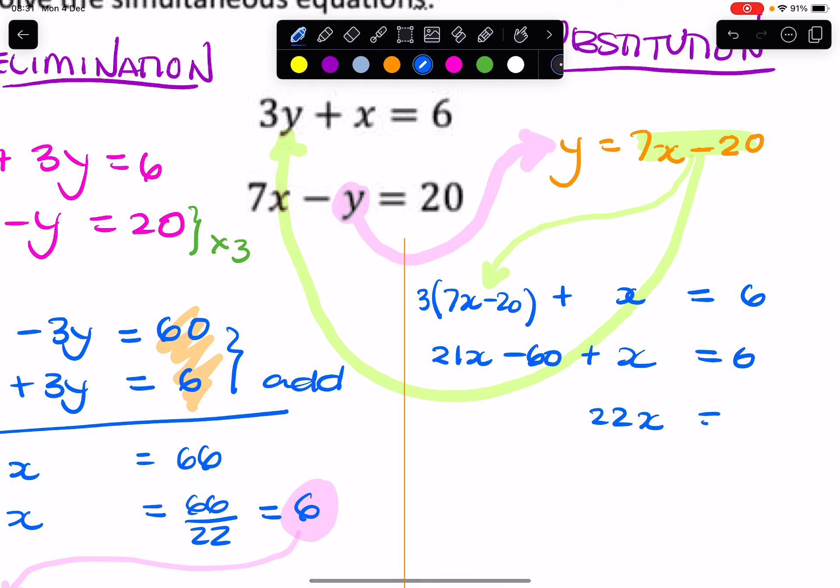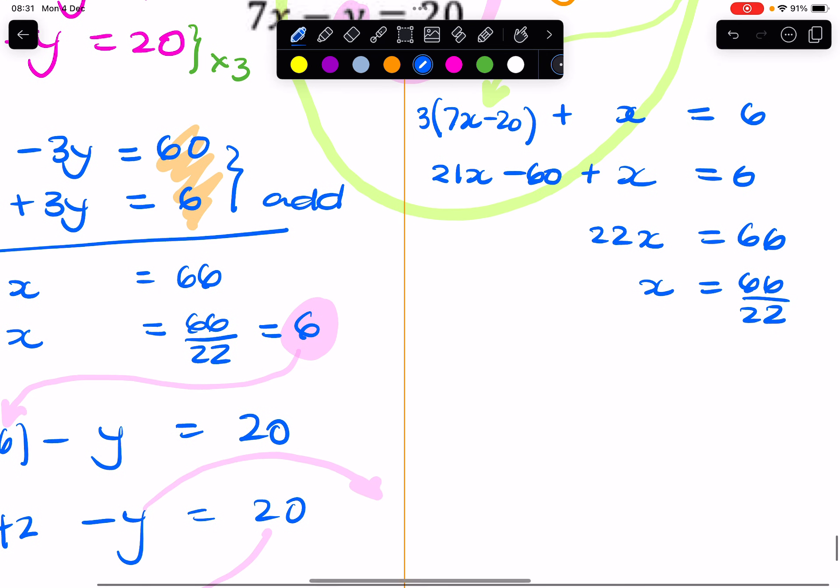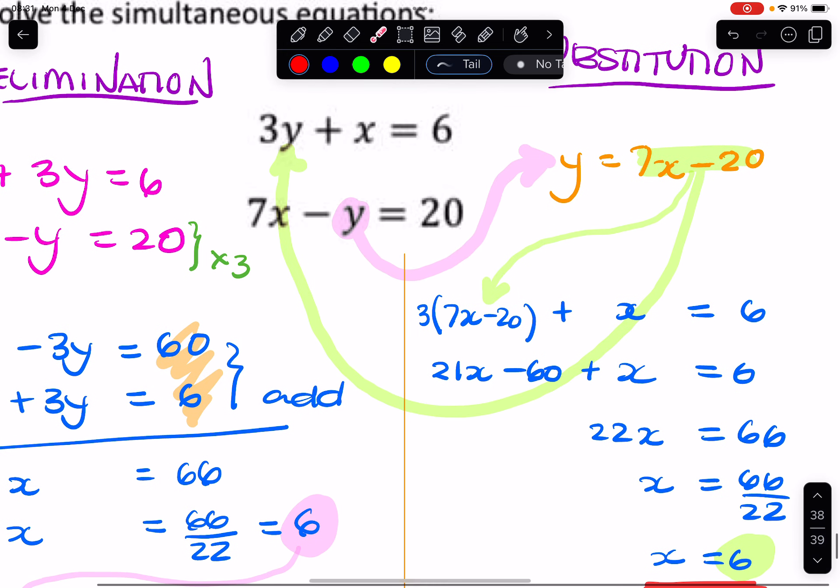So that gives you 22x equals 66, and x equals 66 over 22, so x equals 6. So if that's familiar, it's because it's the same answer. Now we found x, we can find y by substituting x in there.